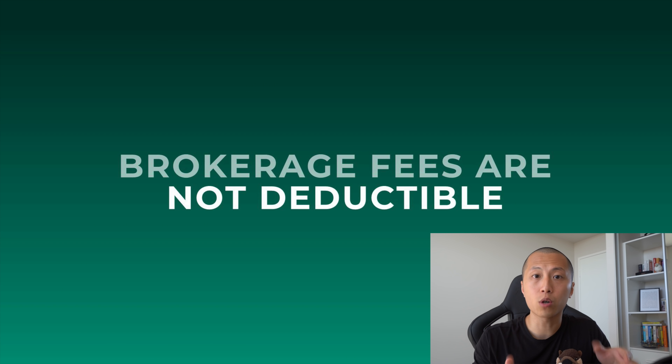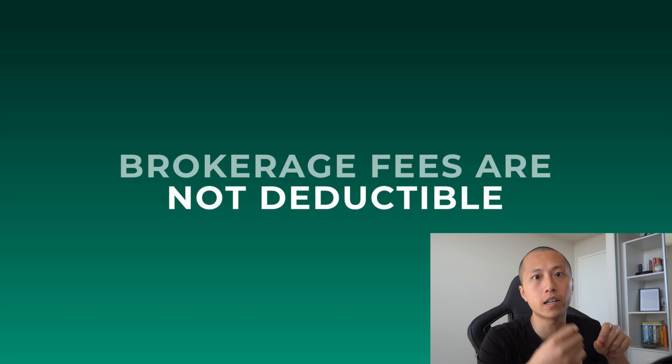That's essentially it for capital gains tax. One of the easiest ways to reduce the amount of tax you have to pay is to simply hold shares over the long term — longer than 12 months — so you're eligible for the capital gains tax discount. Of course, every situation is different, so you know your situation best. If things are more complicated, invest in a good tax accountant because you'll sleep much better at night. One last thing: brokerage fees are not separately deductible. You include the brokerage fee in the purchase price when you calculate your capital gains.